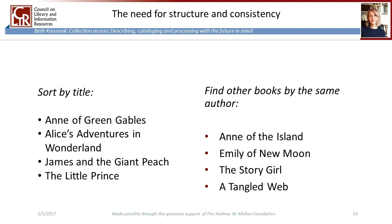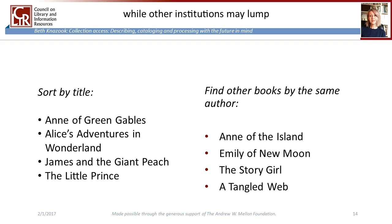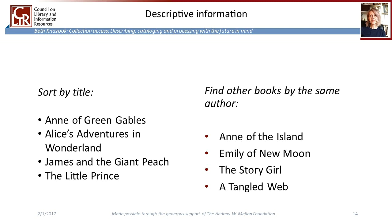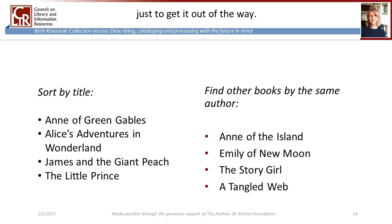The need for structure and consistency applies to all types of records you might encounter as a cataloguer. Some of you will be working in institutions where cataloging is an entirely separate task from acquisitions and processing, while other institutions may lump this together with cataloging, particularly if you're working in a one-person operation. To recap, you need three key types of information to manage your resources: descriptive, administrative, and technical or preservation. Descriptive information is meant to be seen by the public, while administrative and technical metadata is mostly behind-the-scenes. I'm going to jump to the behind-the-scenes stuff first just to get it out of the way.